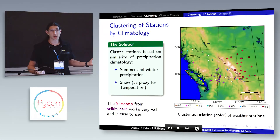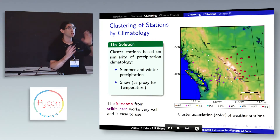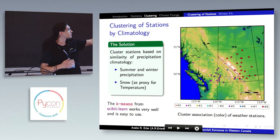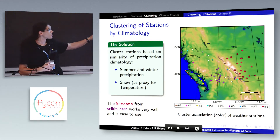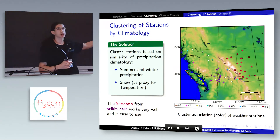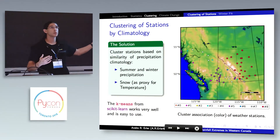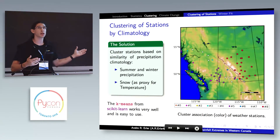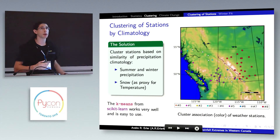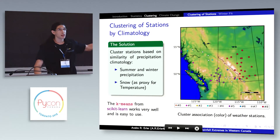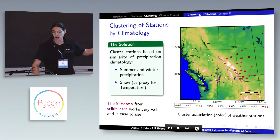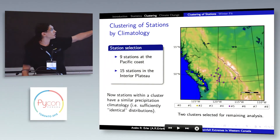Applying k-means gives a very robust partitioning into stations — here I have nine different categories. If you use a different algorithm, like a hierarchical algorithm, it basically works exactly the same and you get the same result. This is pretty robust. Some of the nine clusters are very small, which are basically outliers, but I'll focus on two of them.